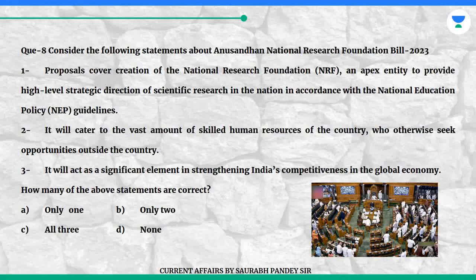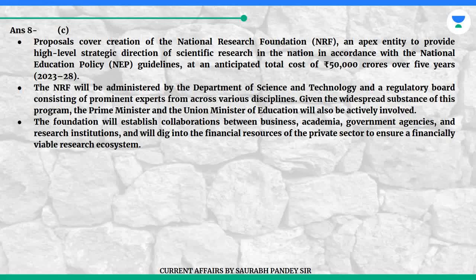Question 8: Consider the following statements about the Anusandhan National Research Foundation Bill 2023. Statement 1: Proposals cover the creation of the National Research Foundation (NRF), an apex entity to provide high-level strategic direction of scientific research in the nation in accordance with the National Education Policy (NEP) guidelines. Statement 2: It will cater to the vast amount of skilled human resources of the country, who otherwise seek opportunities outside the country. Statement 3: It will act as a significant element in strengthening India's competitiveness in the global economy. How many of the above statements are correct? A. Only one. B. Only two. C. All three. D. None. Answer is C.